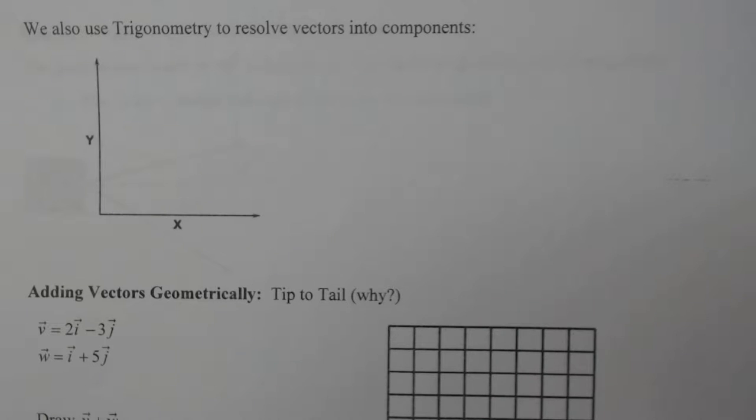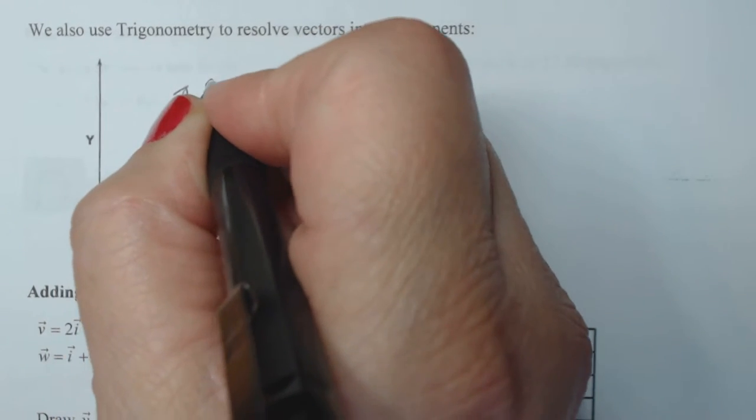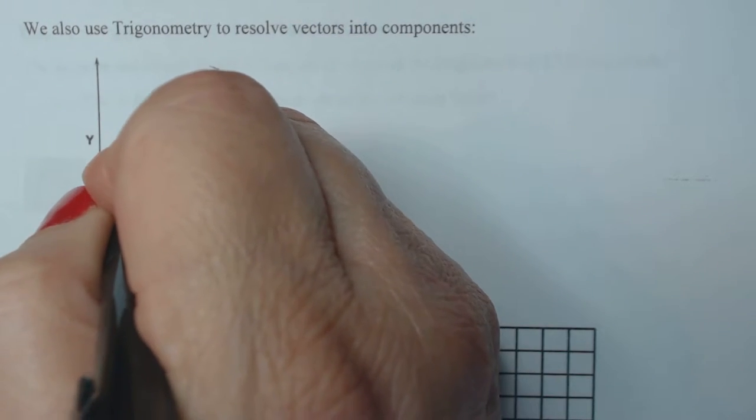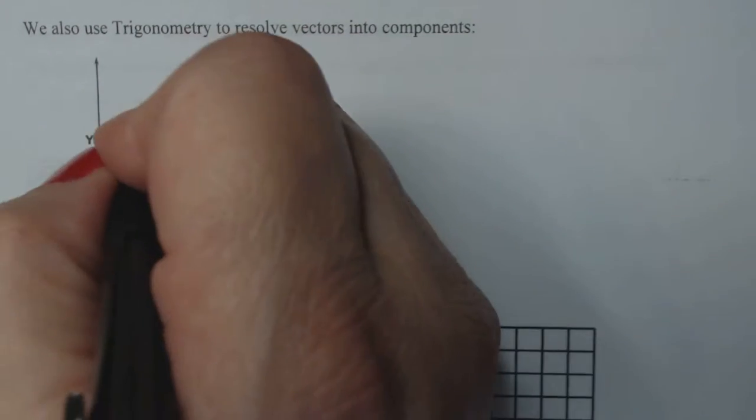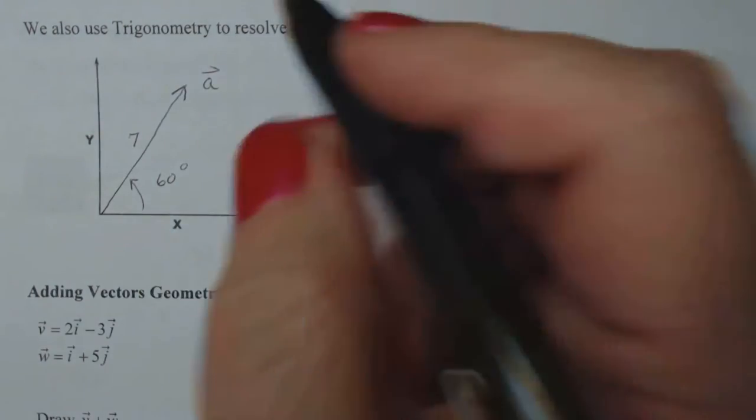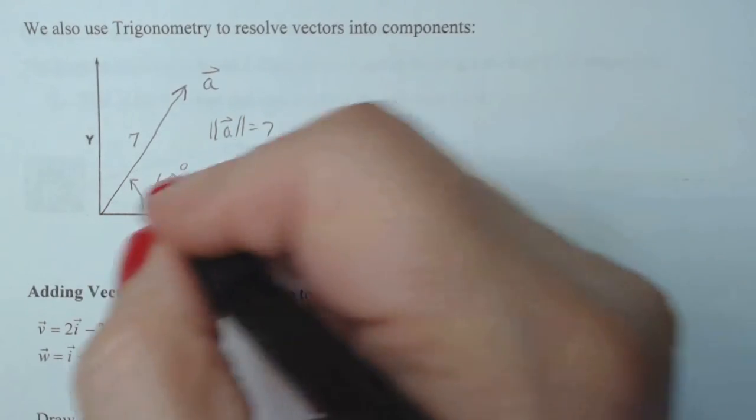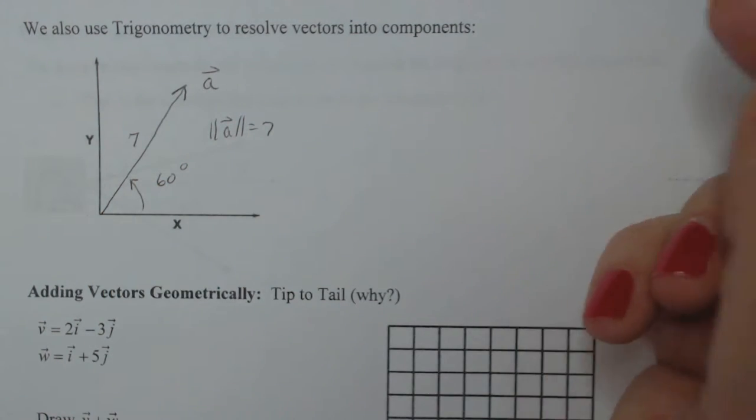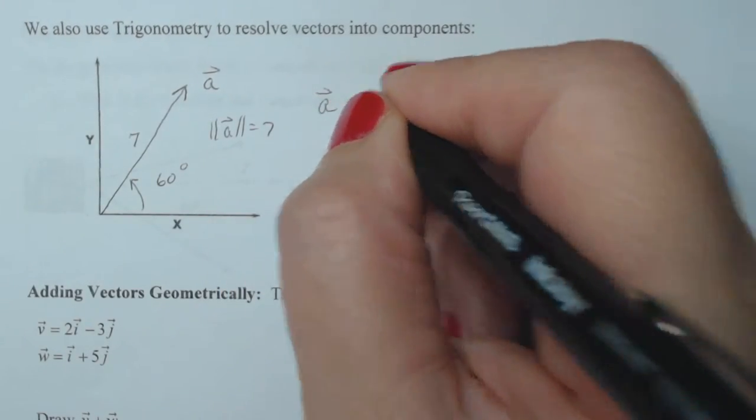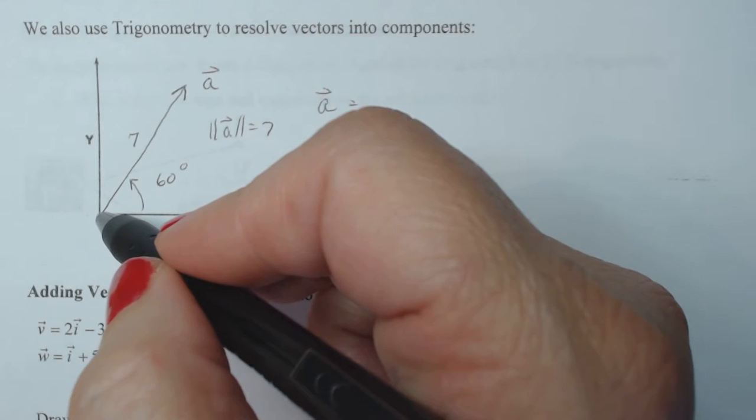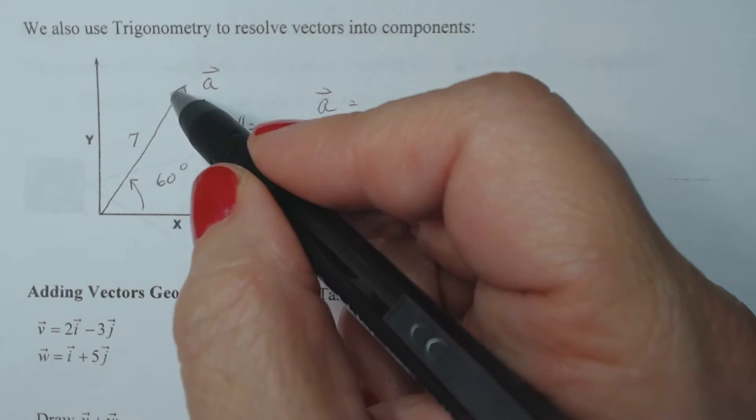So let's try a problem here. Let's say I have a vector here and I'm gonna call it vector a and it makes a 60 degree angle with the horizontal. In other words, that's its reference angle and I'm gonna say its length is seven. So magnitude seven and it makes an angle of 60 degrees with the horizontal. So how would I come up with the components of a? I have to think about what is this length here and what is this length here. So that length would be I and that length would be J.